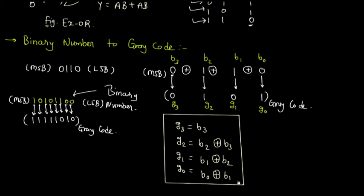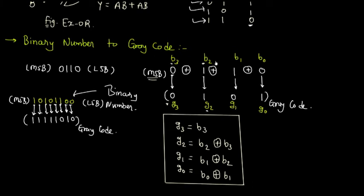Remember the method to convert binary to grey code: write the MSB bit as it is. Then use XOR between B3 and B2 to get G2. Use XOR between B2 and B1 to get G1. Use XOR between B1 and B0 to get G0. This is a very easy method to convert any binary number into grey code.